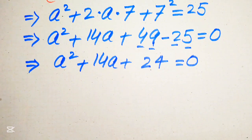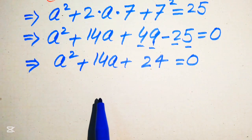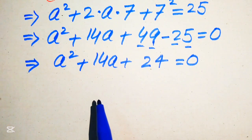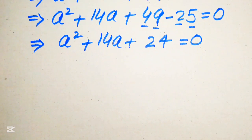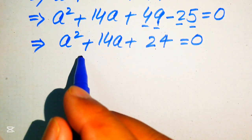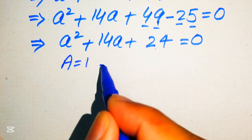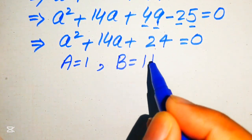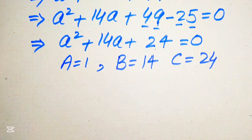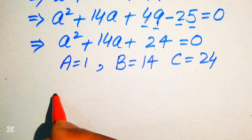We know three methods to solve a quadratic equation: factorization, completing the square, and the quadratic formula. Here we apply the quadratic formula. The coefficients of our equation are: A = 1, B = 14, and C = 24.